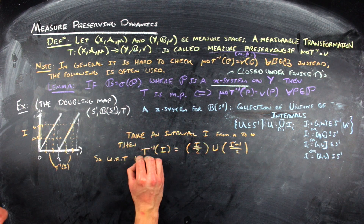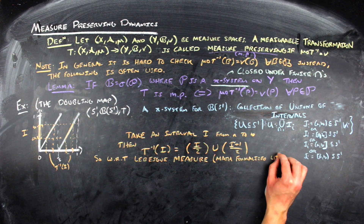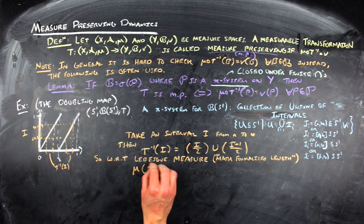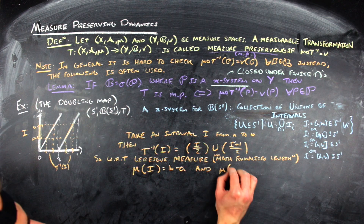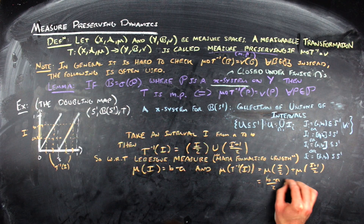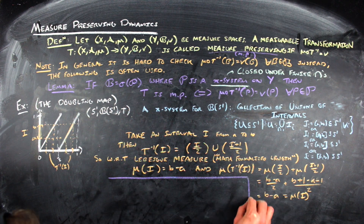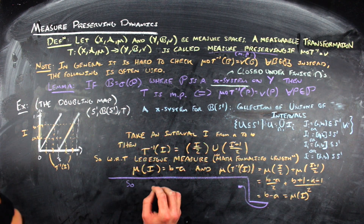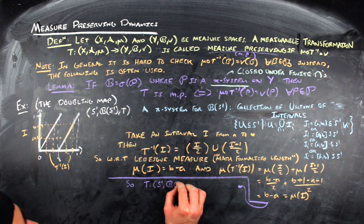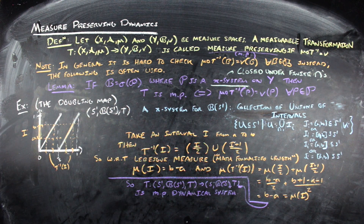If we check the Lebesgue measure on the circle — which is just the mathematical formalization of length — the Lebesgue measure of the interval is B minus A. The Lebesgue measure of the pre-image is (B−A)/2 + (B−A)/2, which equals B minus A. So measure is preserved. Lebesgue measure is not the only measure that could be preserved.